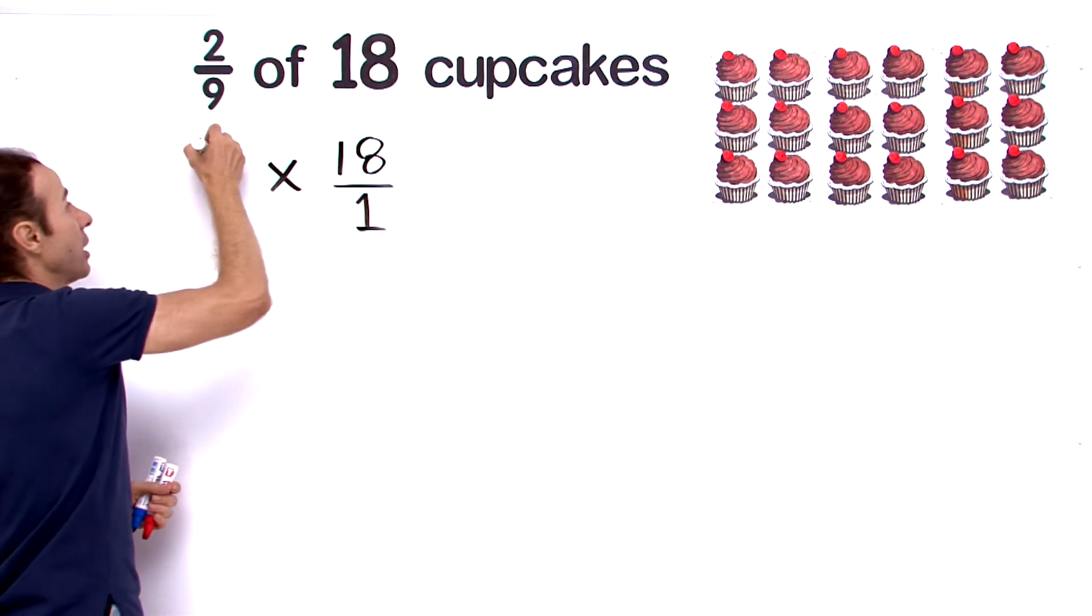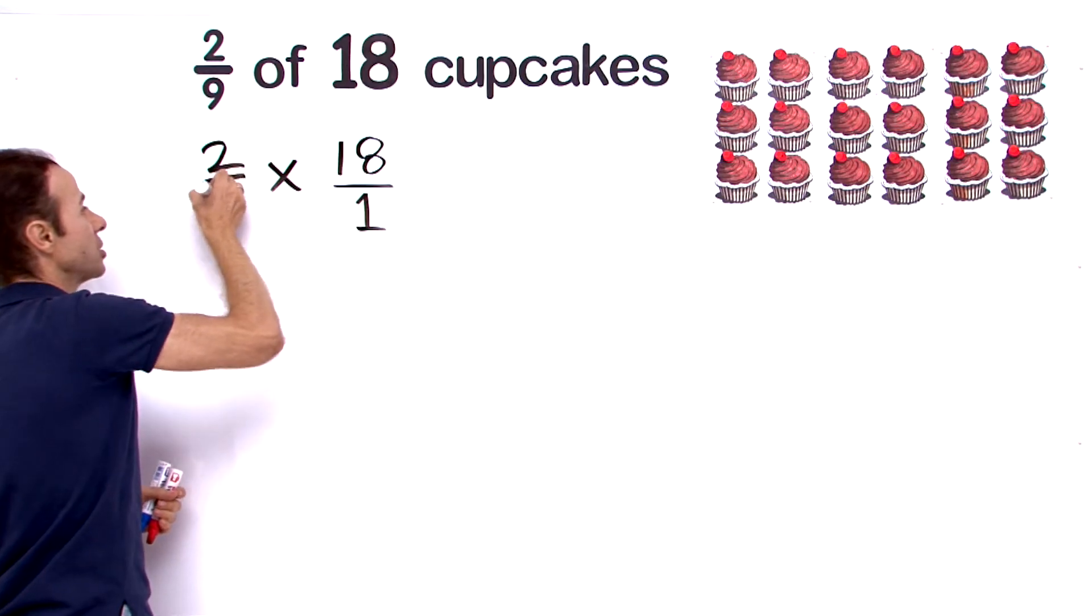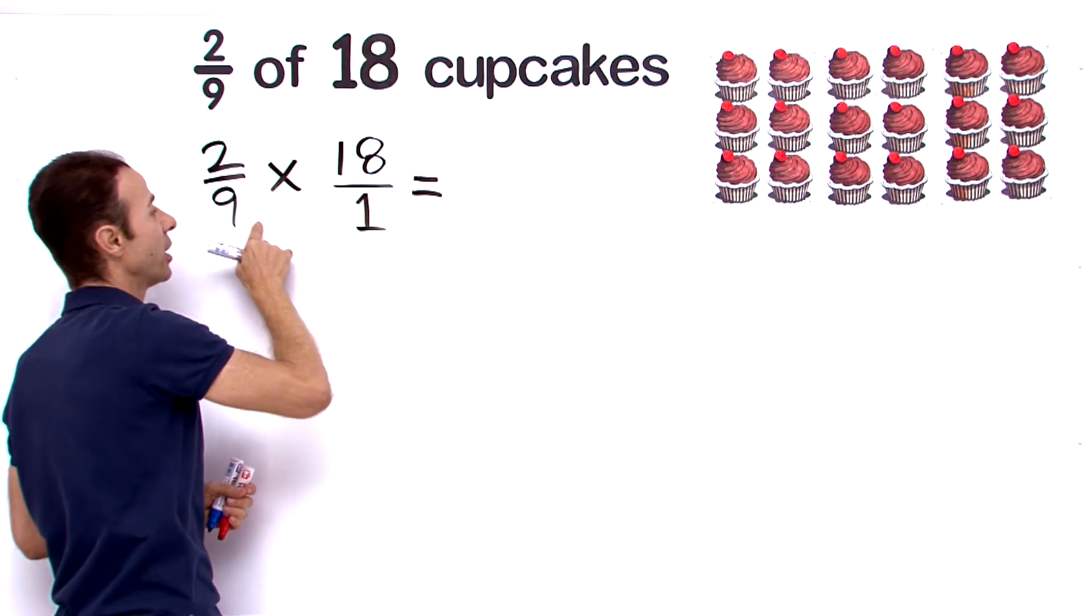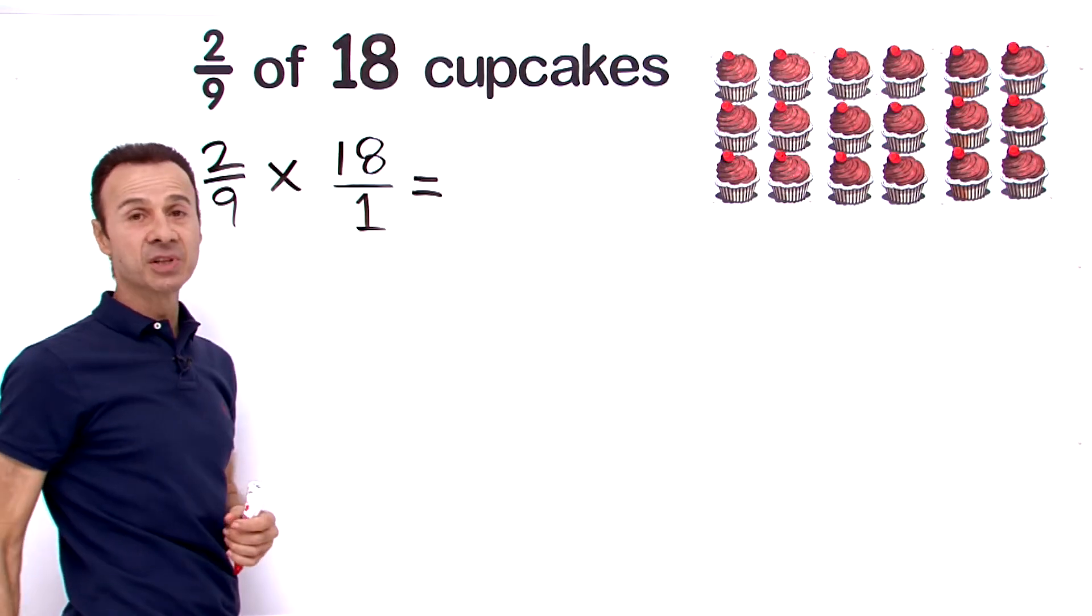Of course, 2/9 is still 2/9, that doesn't change. And now all we do is multiply numerator times numerator and denominator times denominator.